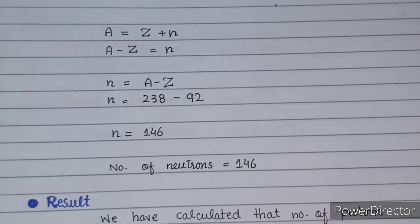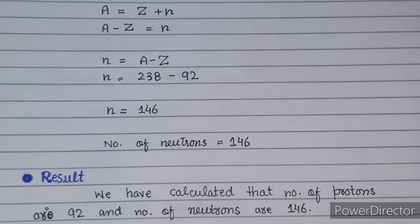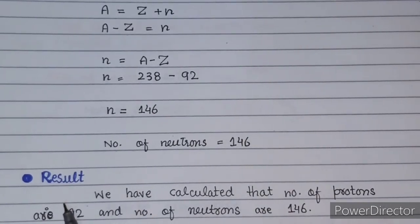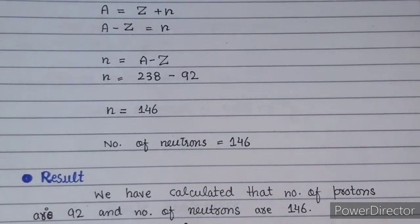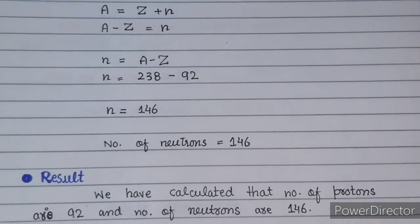We have also solved the second part. The next heading is the 'Result.' Without the result, the numerical is incomplete. In any question — whether short or long — you have to give the result in the last heading as a statement. Here we have calculated that the number of protons is 92 and the number of neutrons is 146. This was a complete numerical. I have solved Example 1.1 — you have to practice this. The next examples will come and we will solve them together.